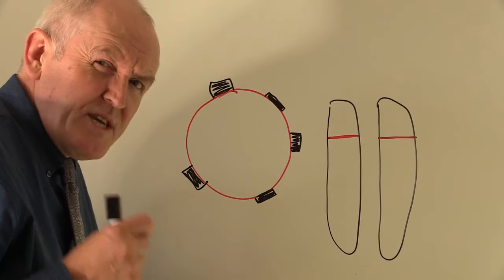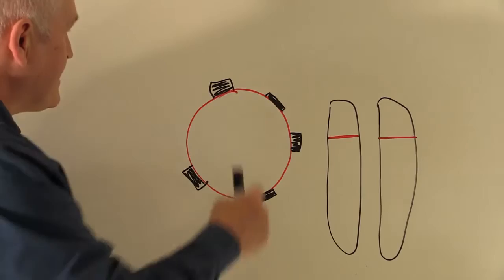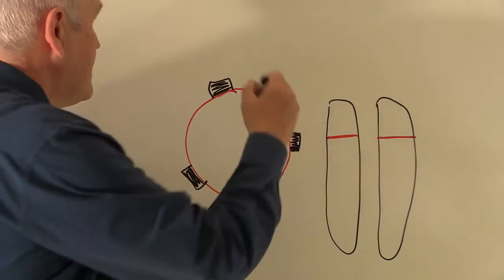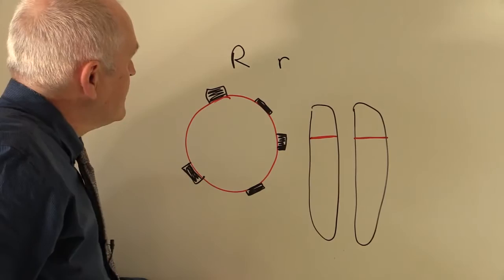Now, a dominant gene is one which will be expressed if present. And the Rhesus factor is coded for by a dominant gene. So by convention, we denote dominant genes as a capital letter R. And the recessive gene, which would result in no Rhesus factor being present, we represent with a lower case r.